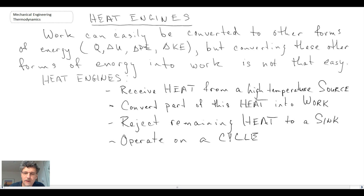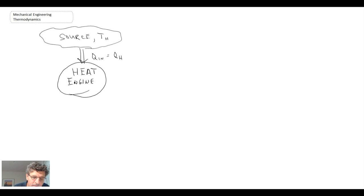Let's take a look at that schematically. So what we said is that we have a source and it is going to be what we call TH for T hot. Now heat is flowing out of that source and we will refer to that as being Q into our heat engine, which could also be Q from the hot supply. So this is flowing into a heat engine. We haven't defined yet what it is. It could be any number of different cycles that we will study in mechanical engineering thermodynamics.